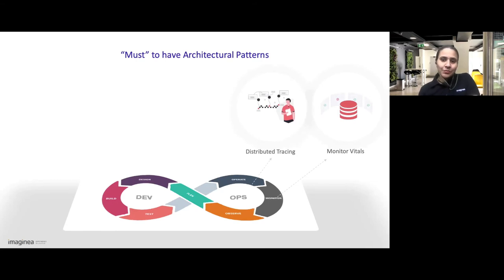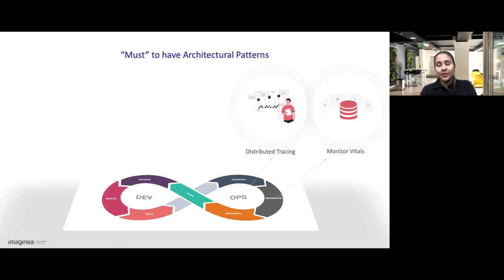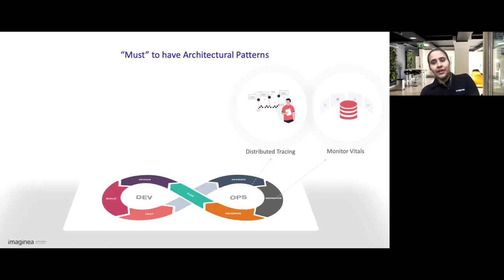Number two: distributed tracing. How many of us have debugged microservices applications under fire, especially during an outage? Thanks to Dapper — the Google research paper on distributed tracing — detailed information on spans and traces is well explained. There are tools like OpenTracing, now called OpenTelemetry, and we need to add traceability into our system.